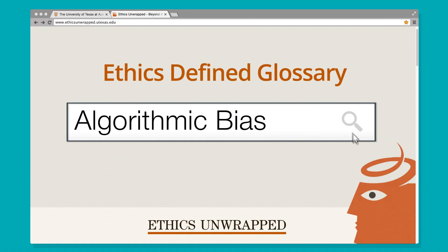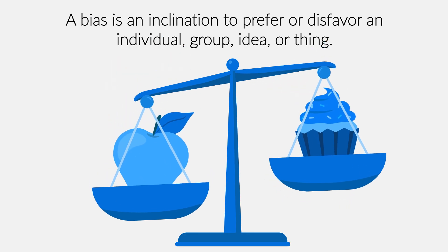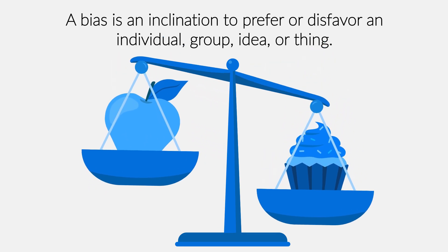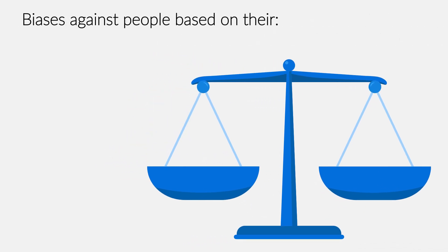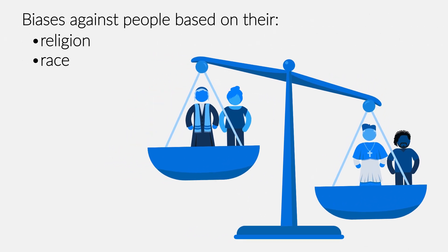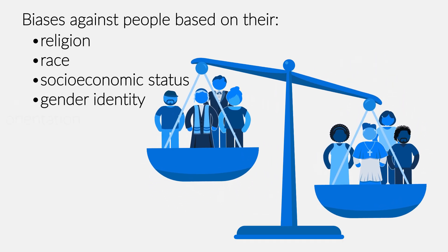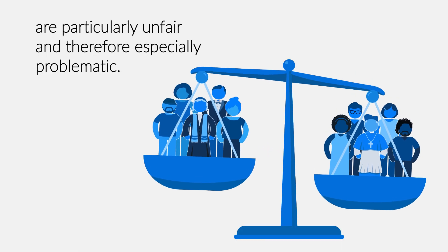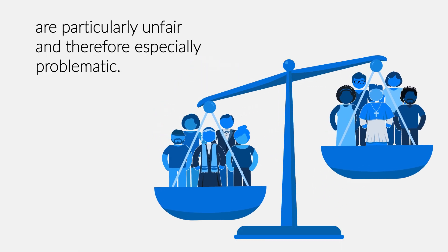Algorithmic Bias. A bias is an inclination to prefer or disfavor an individual, group, idea, or thing. Biases against people based on their religion, race, socioeconomic status, gender identity, or sexual orientation are particularly unfair and therefore especially problematic.